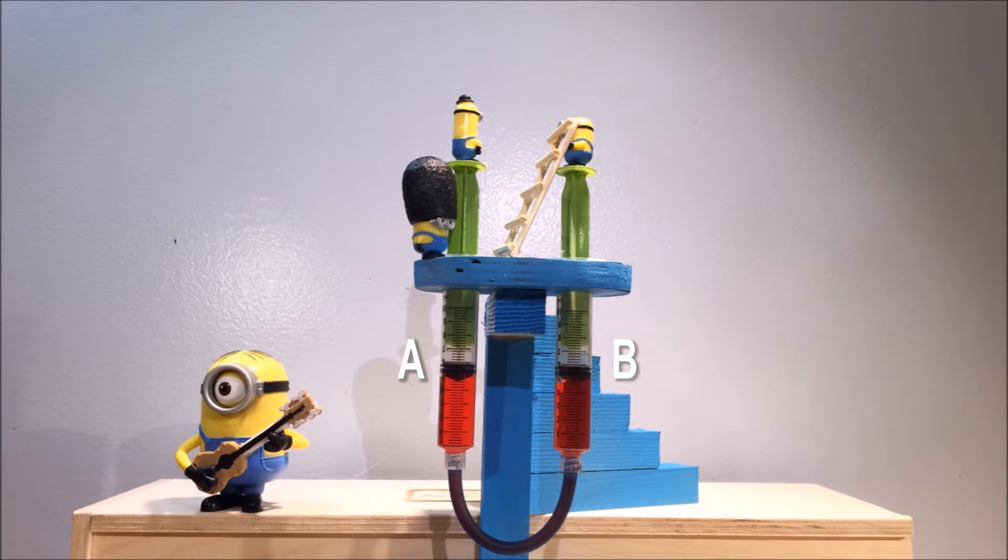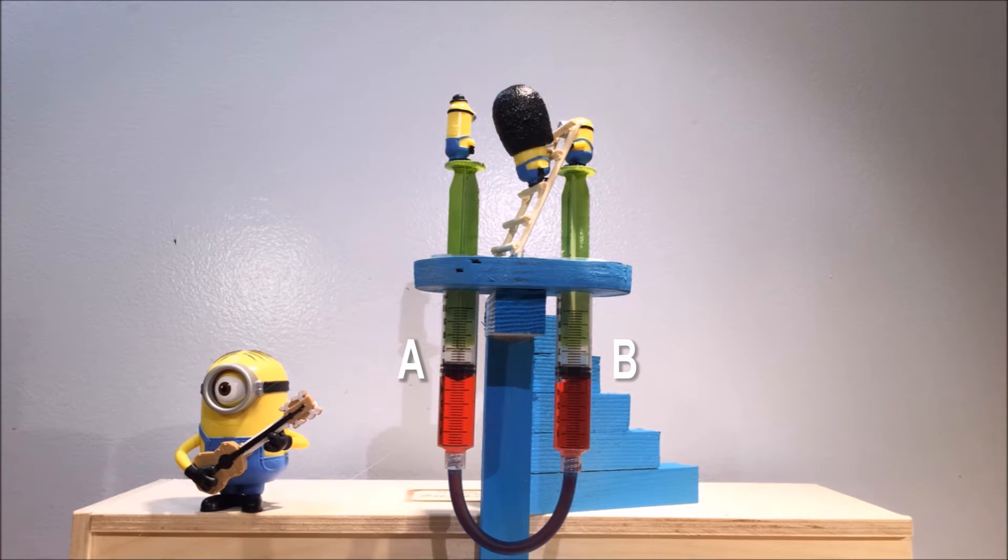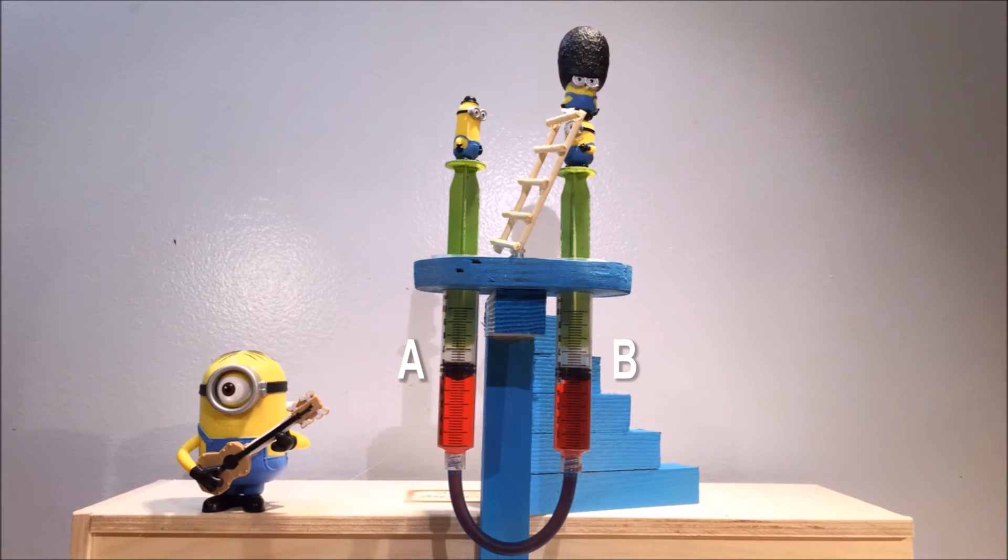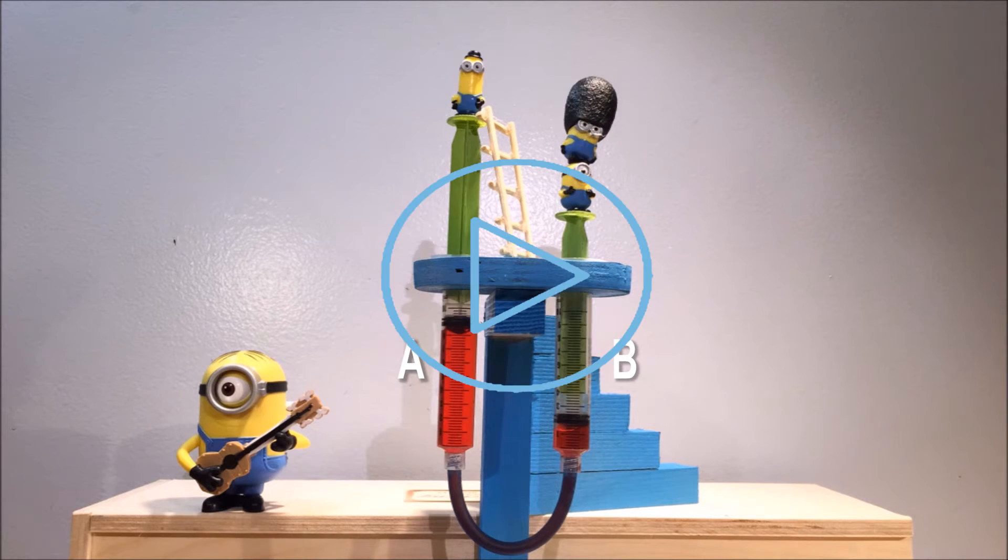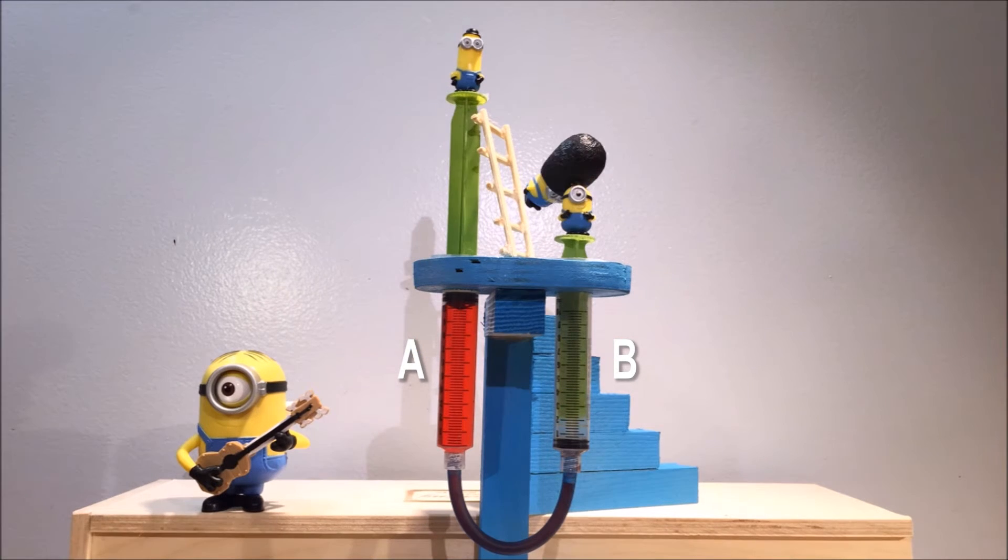What do you think will happen when Bob climbs on top of Stewart? Exactly. Piston B moves down, which pushes Piston A up. This is because we now have two minions pushing down on Piston B and one pushing down on Piston A.